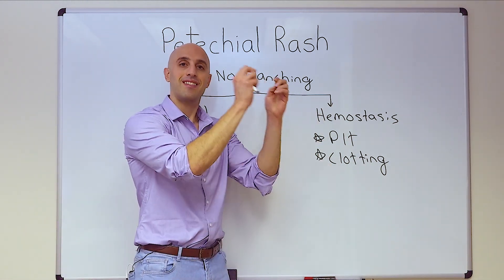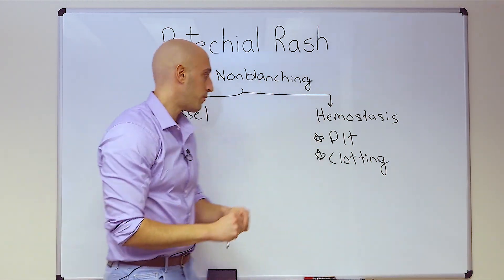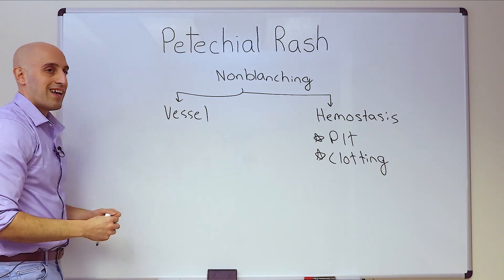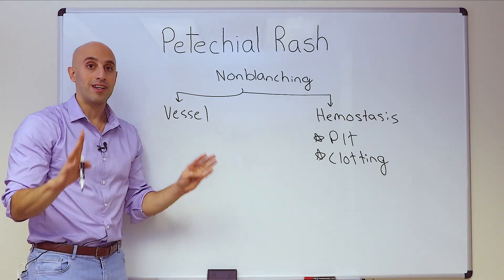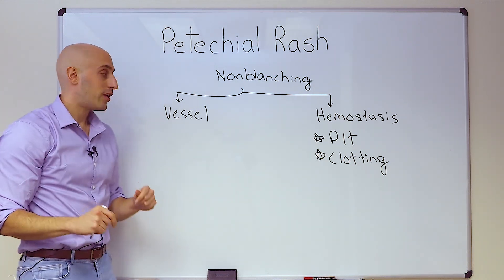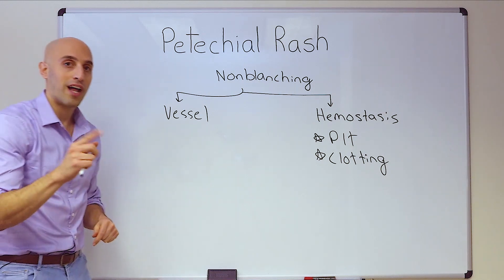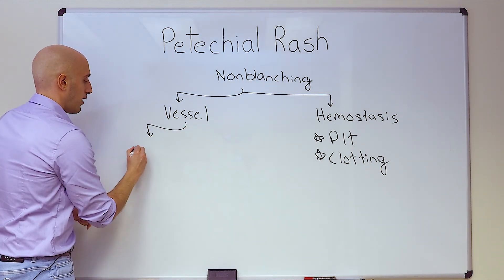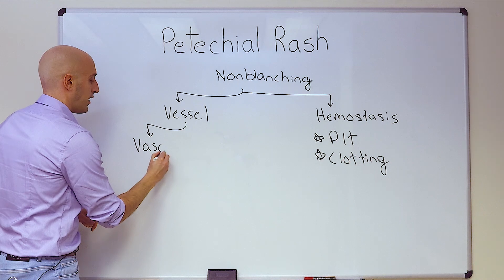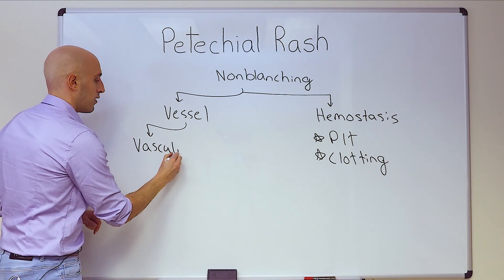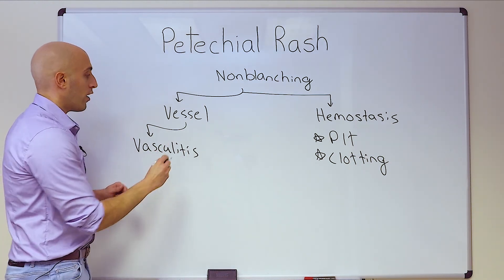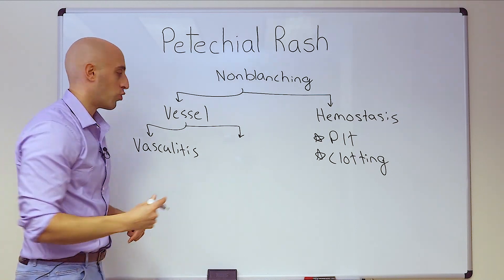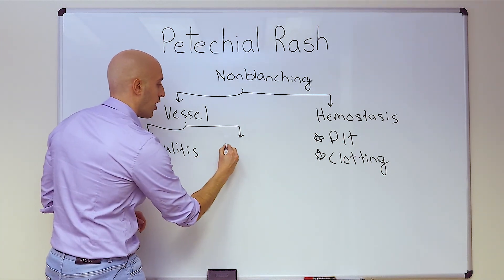That's why we send a platelet level and a PT and PTT in a patient with a petechial rash. But let's say hemostasis is normal — now we bring our attention to the vessel. This is the most exciting part of the diagnostic journey but also the most challenging, because you need to determine whether someone has a vasculitis or a non-inflammatory vasculopathy — meaning no inflammation, but pathology of the blood vessel.